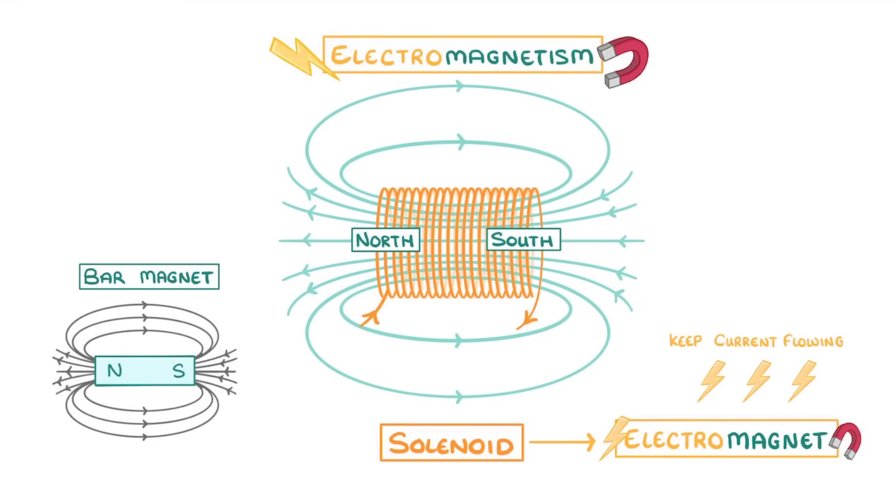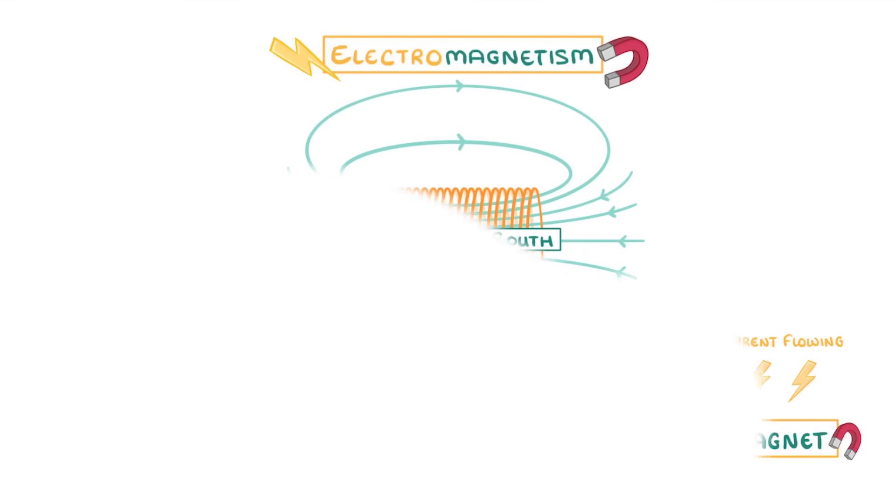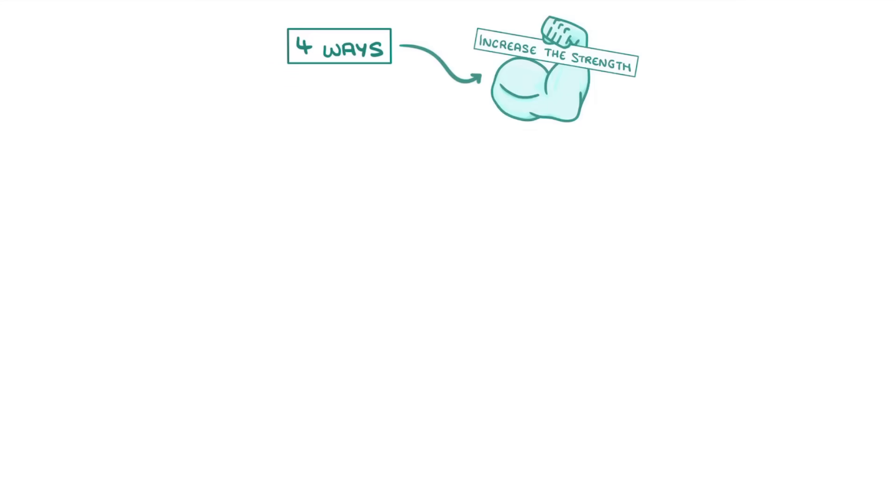Now, the problem with our electromagnets here is that a small electromagnet like this one would only produce a very weak magnetic field. So you need to know the four ways that we can increase an electromagnet's strength. The most obvious way is just to increase the current that flows through the solenoid.